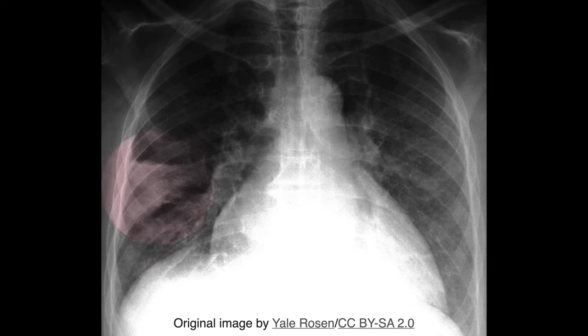The wedge-shaped opacity in the periphery of the lung is a rare but suggestive finding of pulmonary infarction. The base is juxtaposed to the pleural surface, while the rounded apex — that is, the hump — is angled towards the hilum.